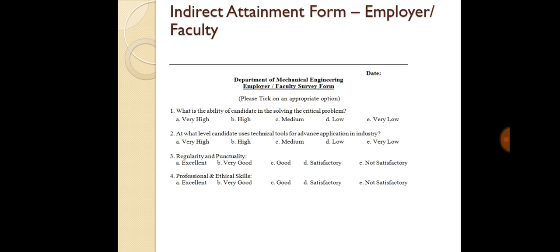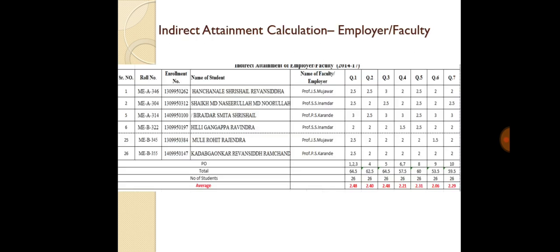For indirect attainment calculations, taking the example of one batch: we write roll number, enrollment number, and name of student; thereafter 13 questions are given. For each question, the level marked by each student is mentioned student-wise. Thereafter for that batch, the total average for each student is calculated in the third last row, and the number of students and average are calculated in the last row. There is also an indirect attainment form for employer or faculty. In that survey form, questions include: what is the ability of the candidate to solve critical problems (very high, high, medium, low, very low), at what level does the candidate use technical tools for advanced application in industry, and regularity, punctuality, professional and ethical skills.